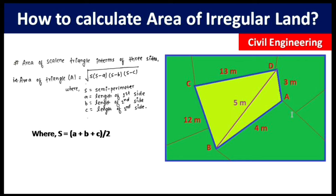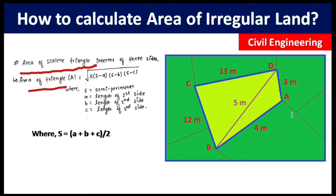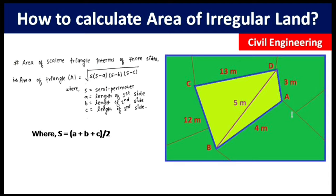Now we will use the formula for a scalene triangle. This is a very precise and accurate method to calculate the area of an irregular land — the method I myself use on civil engineering sites. The area of a scalene triangle is: A = √(s·(s−a)·(s−b)·(s−c)), where s is the semi-perimeter, and a, b, c are the side lengths.